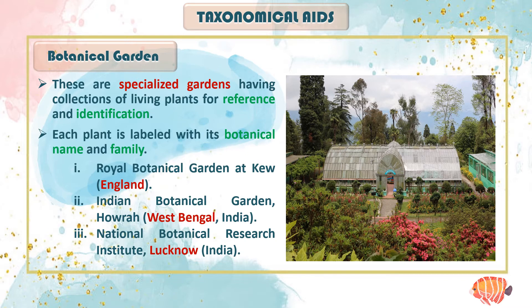Students of botanical research and taxonomy can see plants here that they might not find anywhere else. In a botanical garden, you get live plants, which helps in identification. When you see a live plant, you can understand what its leaves look like, what the stem is like, how and when the flower comes, how reproduction happens, what the growth period is, how long after sowing the seed does it grow, how fruits are produced. You can take cross-sections of leaves, study microscopic structures under a microscope, and even collect specimens for herbarium sheets.